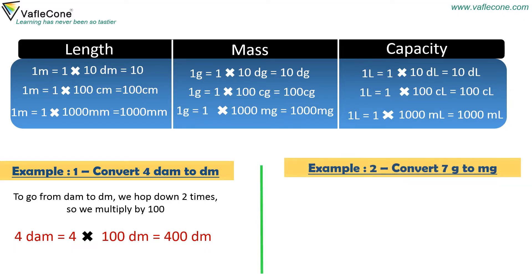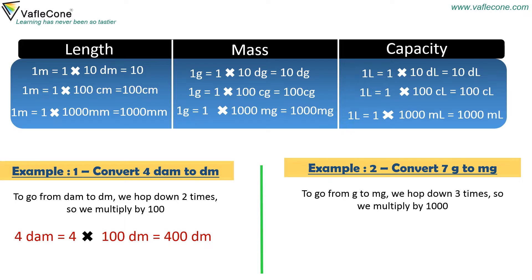Example 2. Convert 7 grams to milligrams. To go from gram to milligram, we hop down 3 times, so we multiply by 1000. 7 grams is equal to 7 × 1000 milligrams, which equals 7000 milligrams.